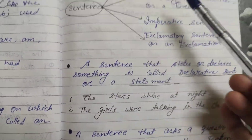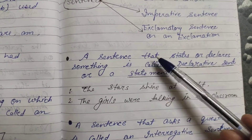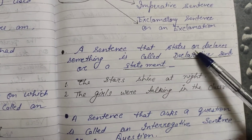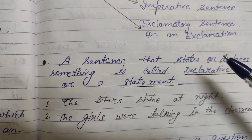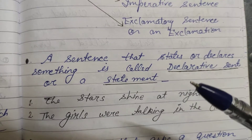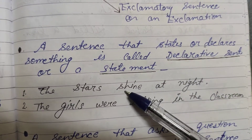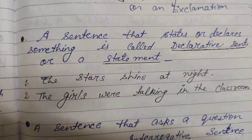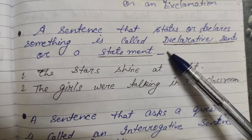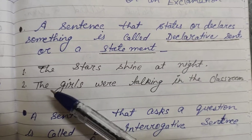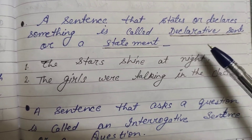Now we come to the first one — that is the declarative sentence, or a statement. A sentence that states or declares something is called a declarative sentence or a statement. Ek aisa sentence jo kisi cheez ko state kar raha ho, statement sentence — both come in the same category.